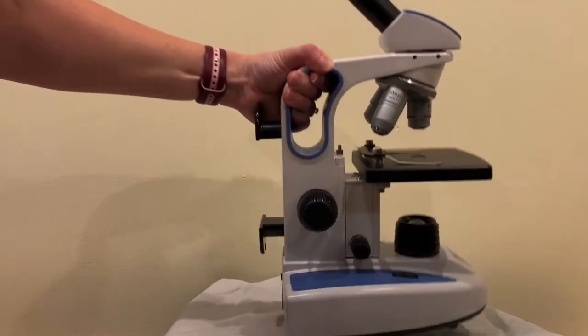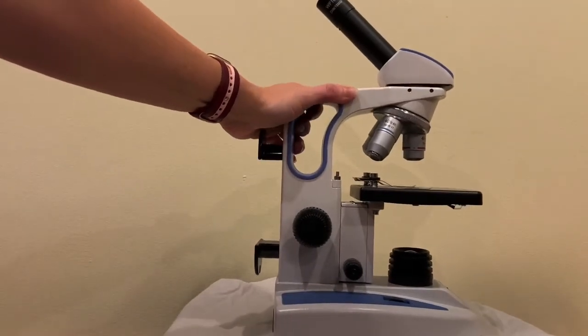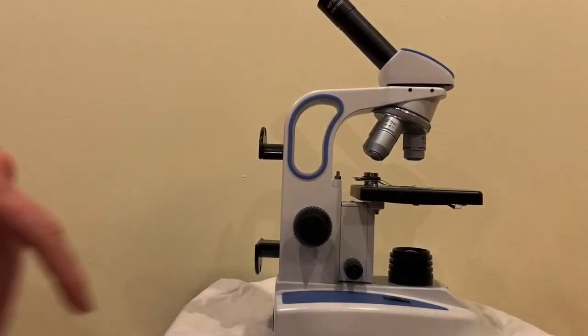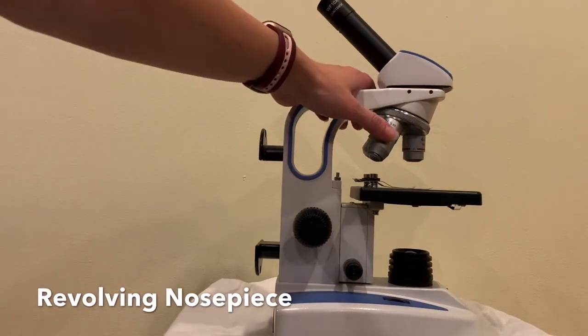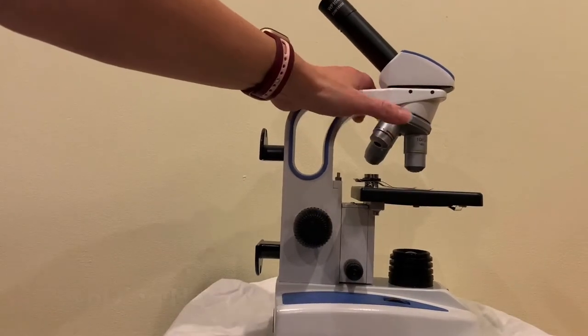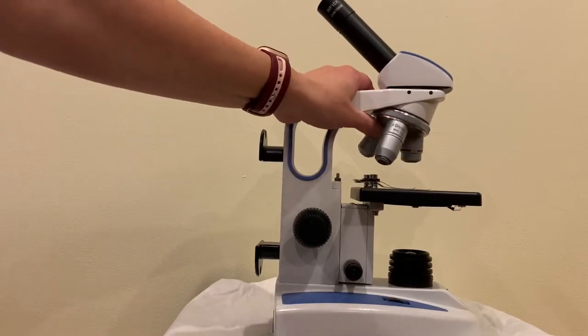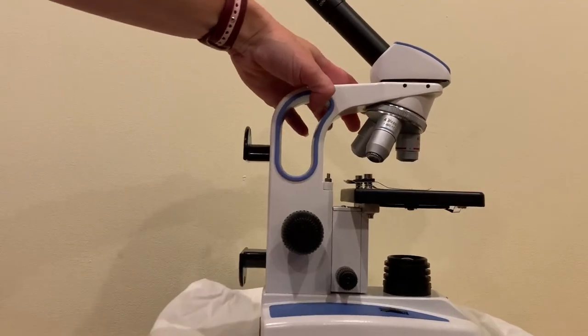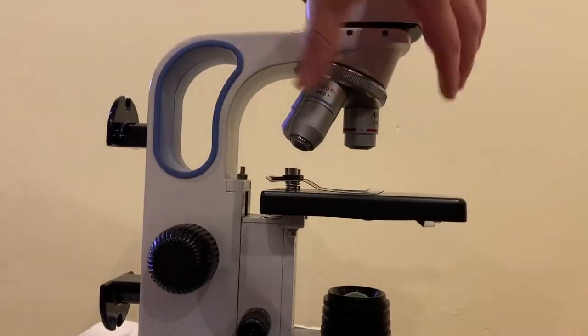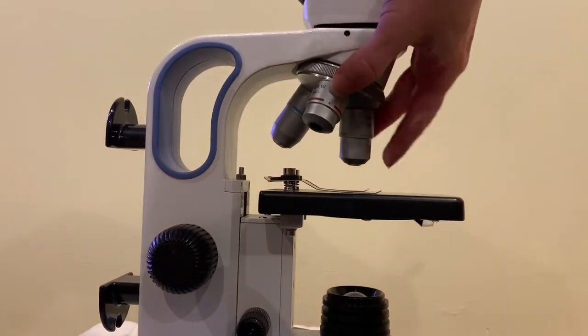The next part of our microscope is the revolving nose piece. Do you see why they might call it a revolving nose piece? It kind of looks like a nose. And it revolves here, right? It goes in a circle.